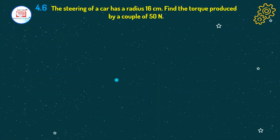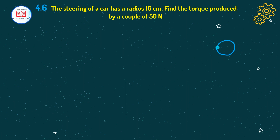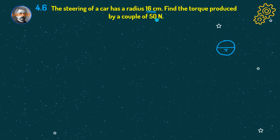Now let's move to the next question, which is the sixth problem. The steering of a car has a radius of 16 cm. Find the torque produced by a couple of 50 newton. So we have a steering wheel and its radius R equals 16 cm. We have to find the torque produced by the couple of force of 50 newton.